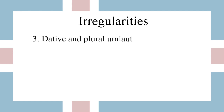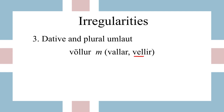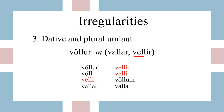Now let's talk about the third irregularity: the dative and plural umlaut. Umlaut means that a vowel shifts into a different vowel, and we know it will happen by looking at those parentheses after the word. For the word 'völlur' meaning 'a field' or 'a court', we have an irregular genitive and an irregular plural. In the plural we see a vowel shift, and that same shift affects the singular dative form as 'vettli'. In the plural we have 'vettlir' and 'vettli', and then the dative and genitive plural are normal.